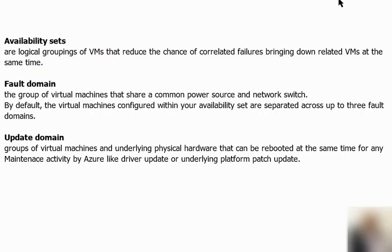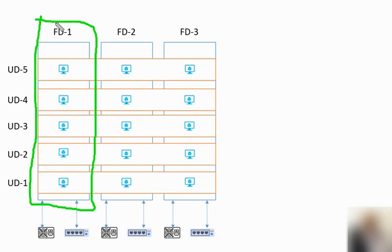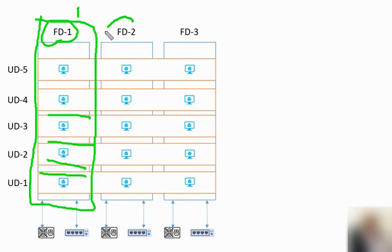Let's understand this further using a diagram. If we have one data center with multiple racks where servers are housed, each rack is a Fault Domain — for example, Fault Domain 1 contains multiple servers or host machines, and on those host machines virtual machines are running. A rack is like a vertical stack of servers or nodes.